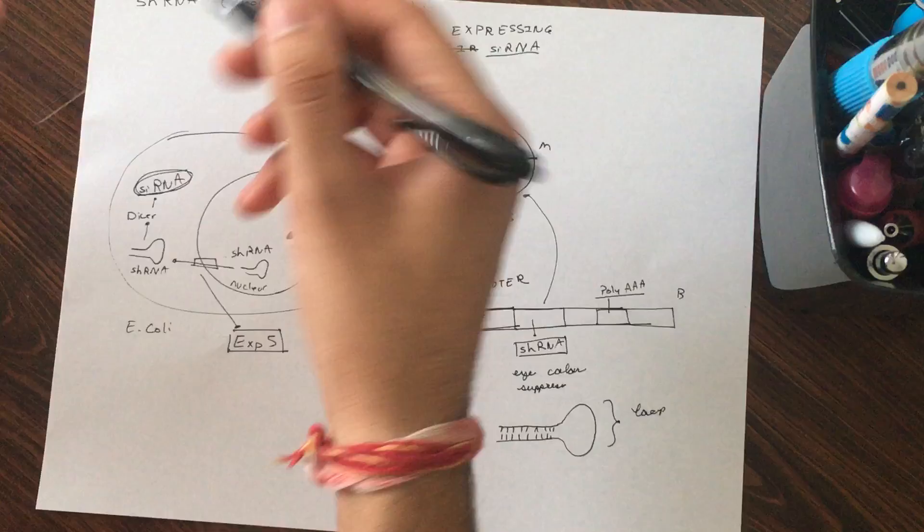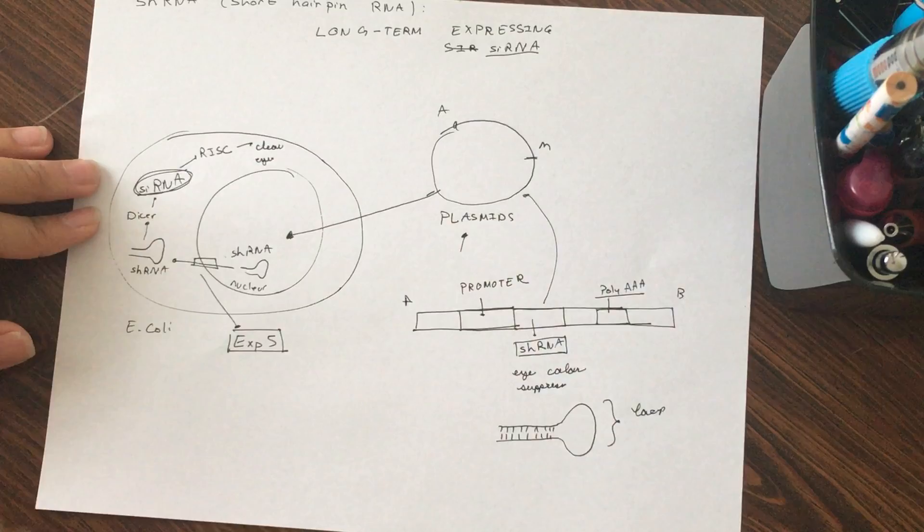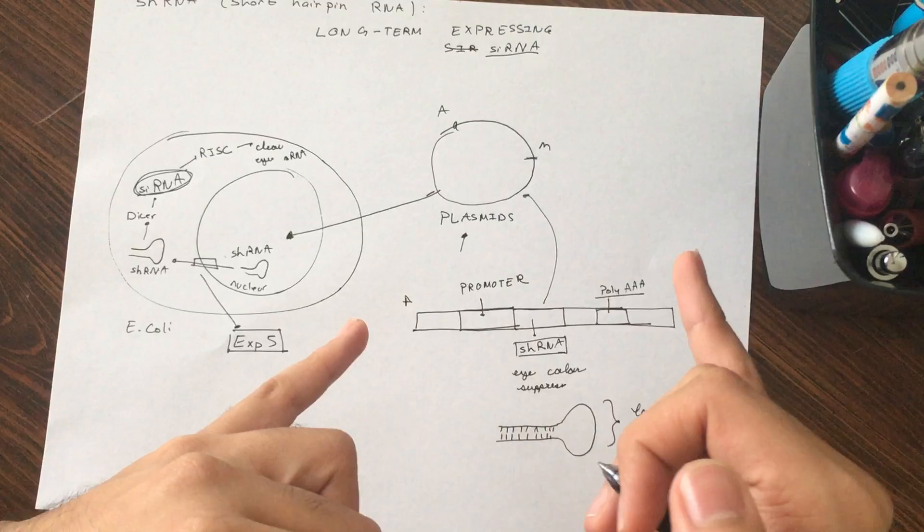And this siRNA can eventually interact with the RISC protein that we were talking about, and it can just cleave the eye color mRNA and stop the eye color protein from being made. So just to review, suppose this is basically researchers making the specific plasmid.